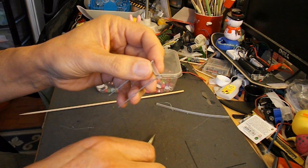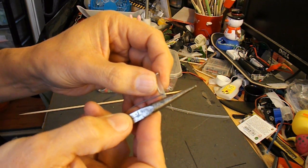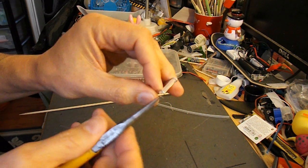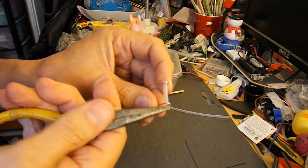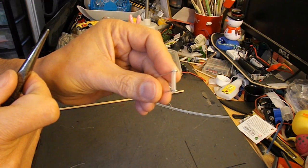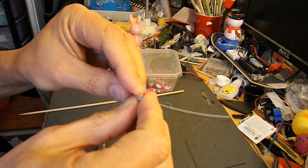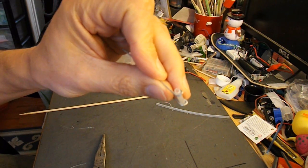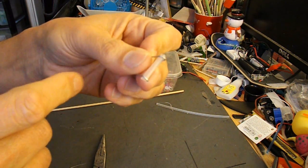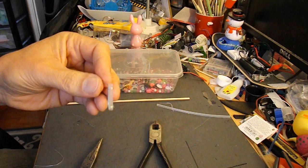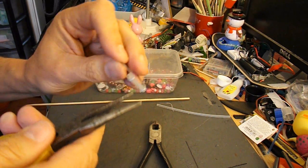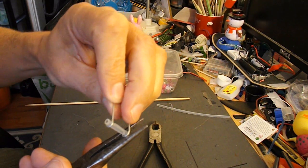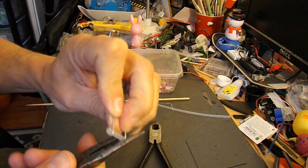One trick you can do is use something hot to just melt the end of the tube into a mushroom shape. Then it can't slide through the gap. So I'll go and... I think I'll turn my soldering iron on. That should do. Just to melt the end a bit. While I'm waiting for my soldering iron to warm up, I'm just bending the paper clip round the plastic a bit more.